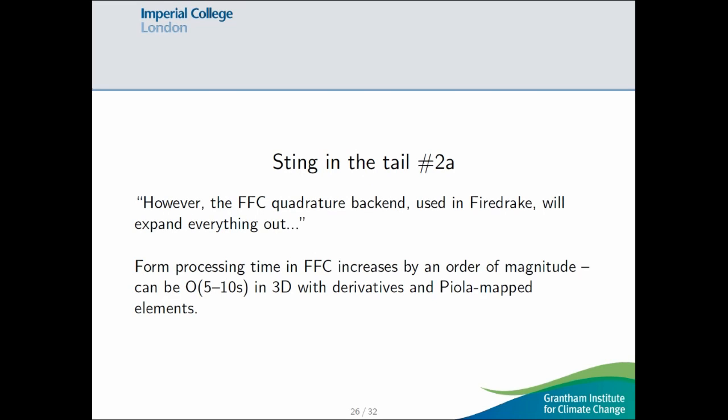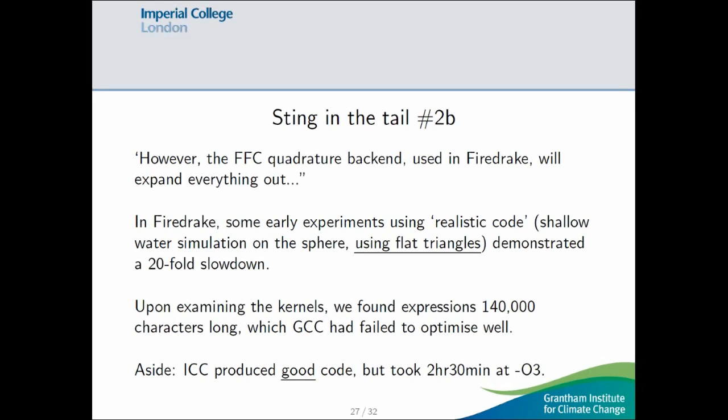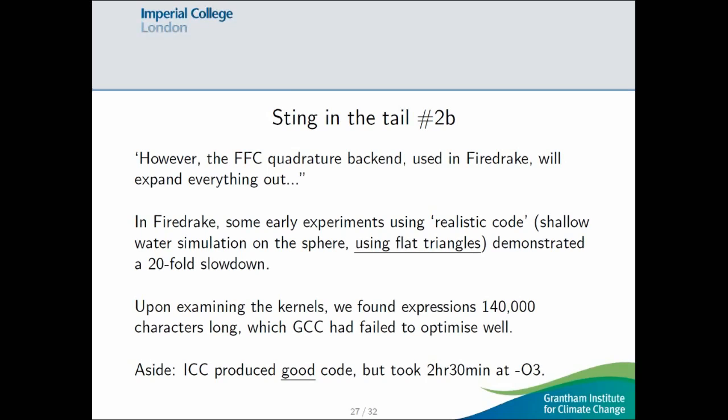So, one consequence of this is that the form processing time goes up a lot. And in 3D, as soon as you have derivatives and Piola mapped elements, this can easily be 5 or 10 seconds. And another consequence of this is, some initial experiments I did with, like, the most complicated code I had lying around, we got a factor 20 slowdown, still using flat triangles. And why is this? Well, I dug into the kernel cache, and I looked at the kernel that was being generated. And there were these expressions, which were sort of 100,000 characters of C in a single line. And GCC had just totally failed to optimize this.